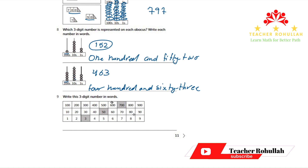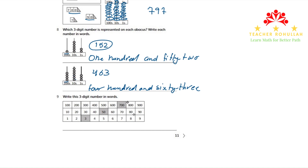In the ninth question, it says write this three-digit number in words. First of all, let me clarify what three-digit number is highlighted here. We have a seven in the hundredths place, five in the tens place, and three in the ones place, because these places are highlighted.